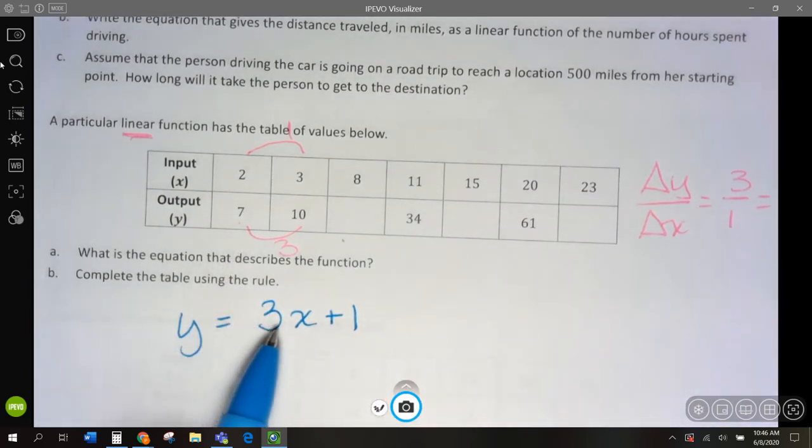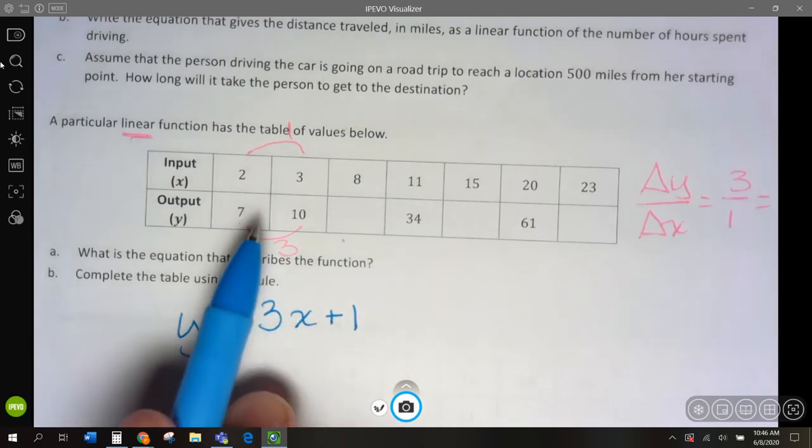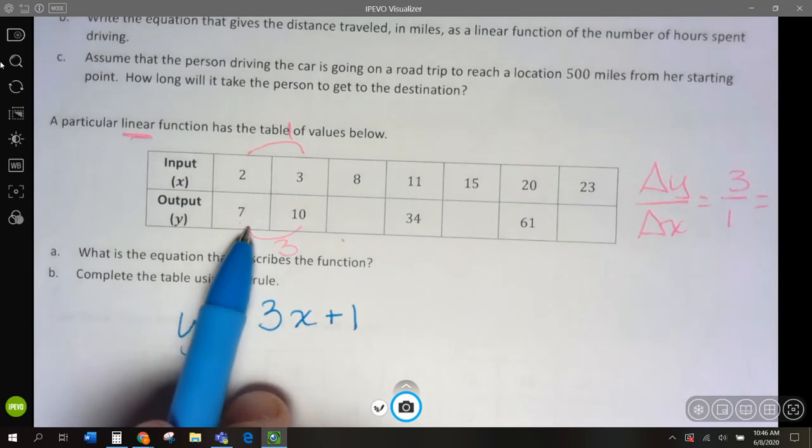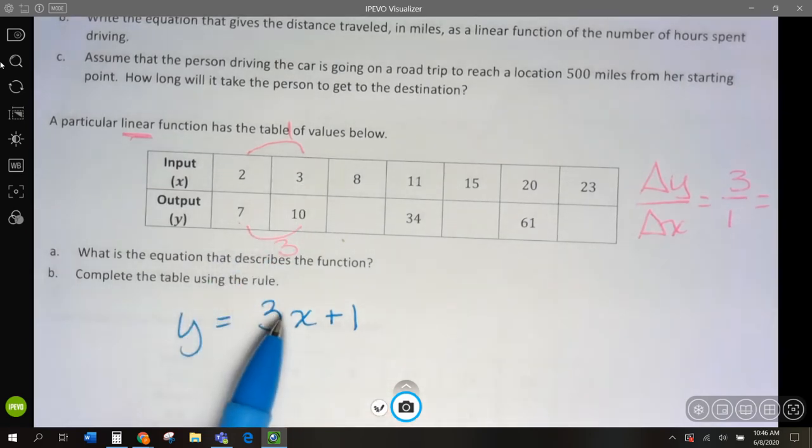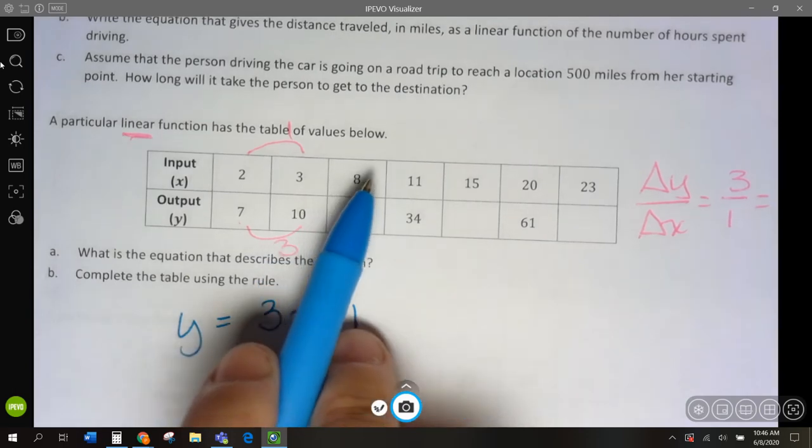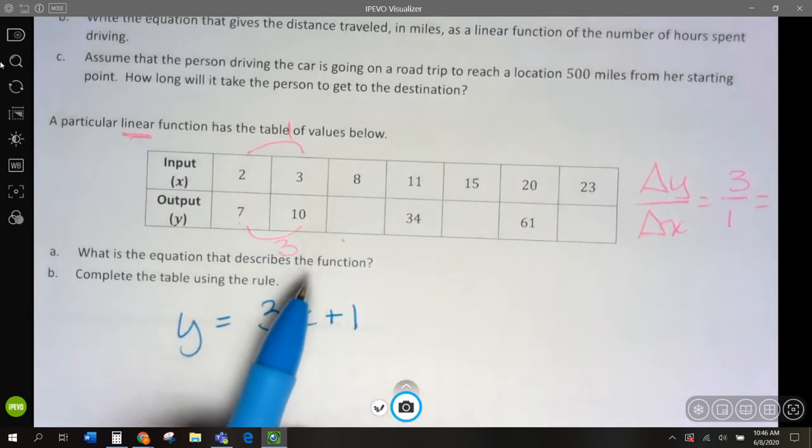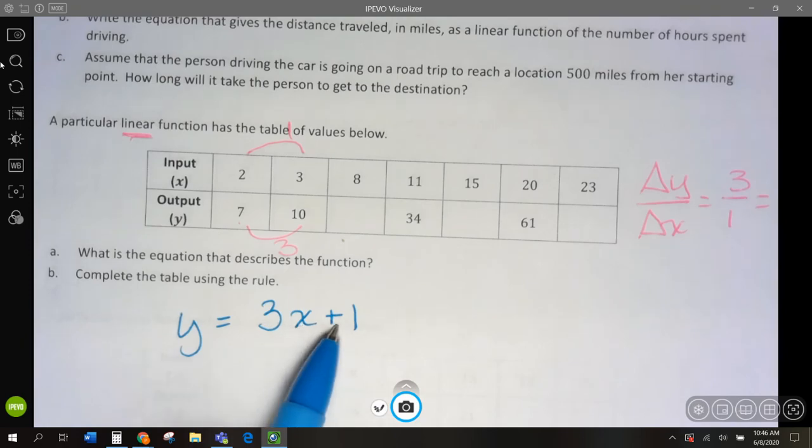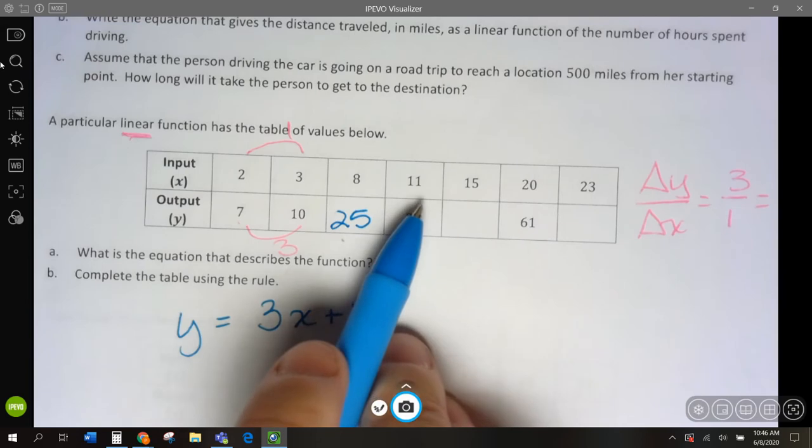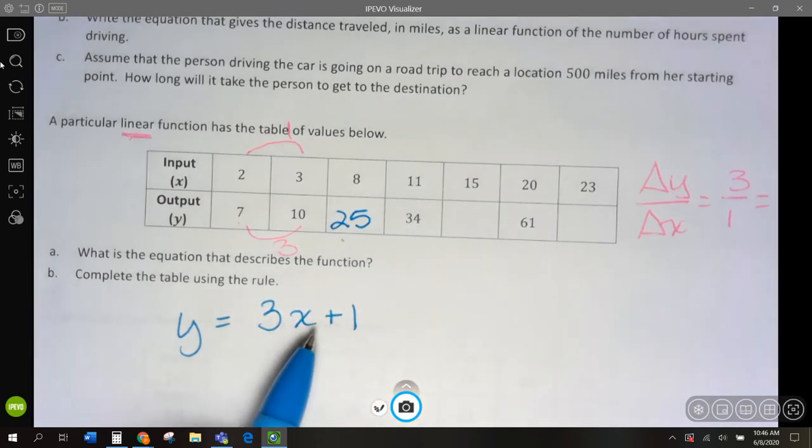So, y equals 3x plus 1. If x is 2, 2 times 3 is 6, plus 1 is 7. If x is 3, 3 times 3 is 9, plus 1 is 10. If x is 8, 8 times 3 is 24, plus 1 is going to give me 25. If x is 11, 3 times 11 is 33, plus 1 is 34.